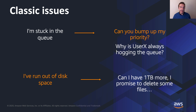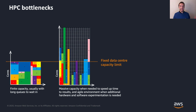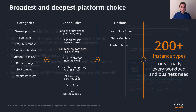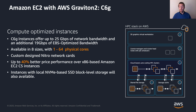The AWS angle is that we would like you to not have those bottlenecks and to move from the model on the left — a fixed-size cluster — to the model on the right, where you can just elastically scale. We have the broadest and deepest platform with a huge range of different instance types. I wanted to focus today on the Graviton2, and specifically on its use for OpenFOAM, which is a popular open source CFD code.